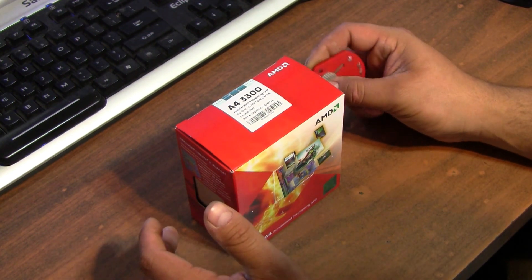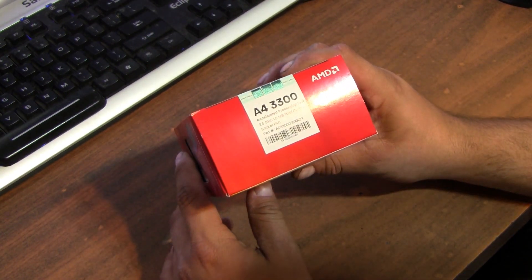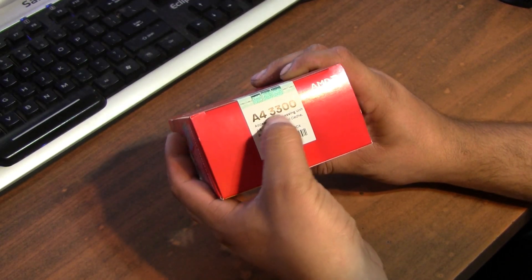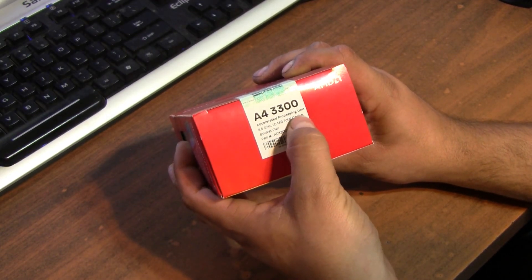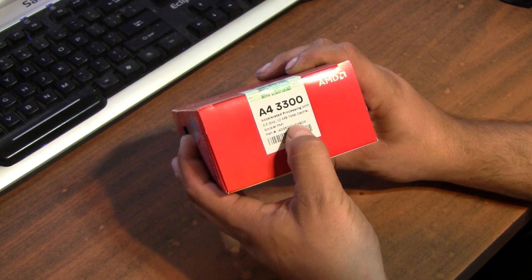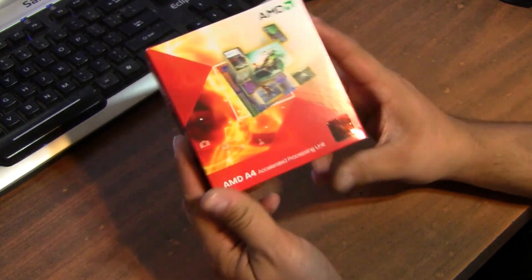So this is, as you can see here, hopefully without the glare, it says A4-3300 accelerated processing unit, 2.5 gigahertz, 1 megabyte of total cache, socket FM1. Here's the front of the box, the side of the box.